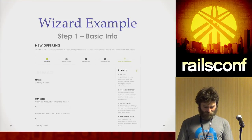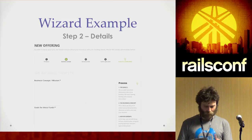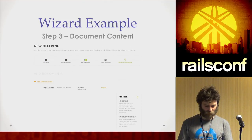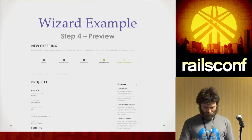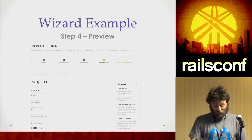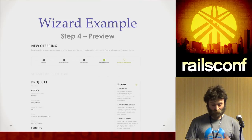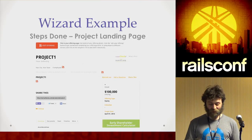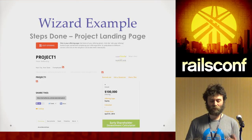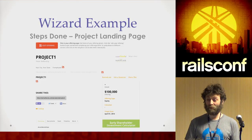The wizard example had four steps. Step one is to collect basic info. Step two is details, more details. Step three is upload some document content. Step four is just a preview before you finish the wizard. And then once it's done, it shows you a summary — like a landing page for the project that the business is proposing for investment.